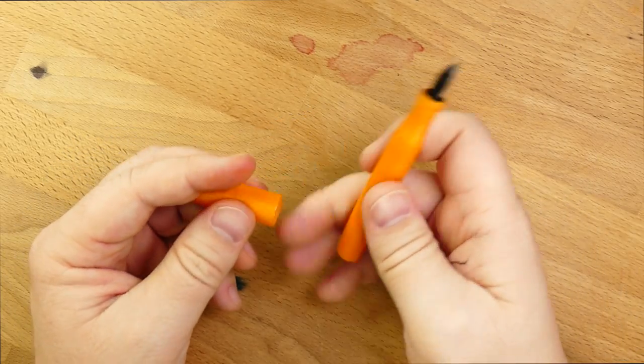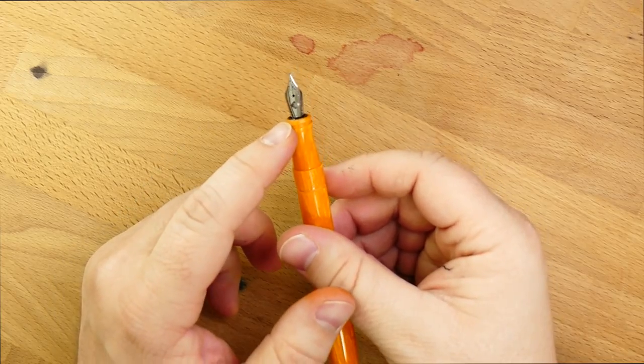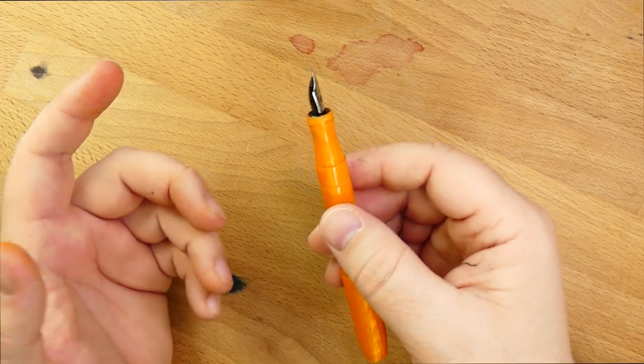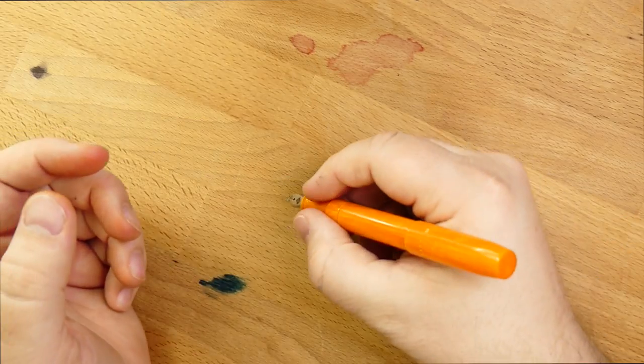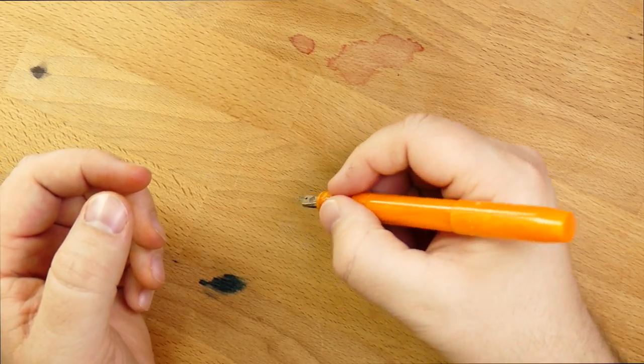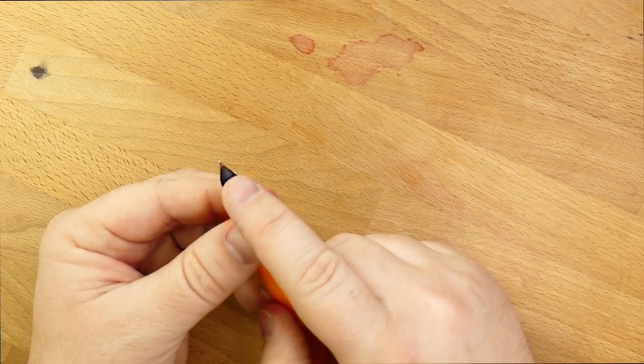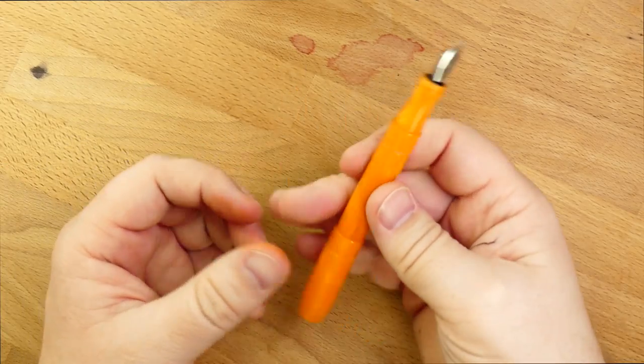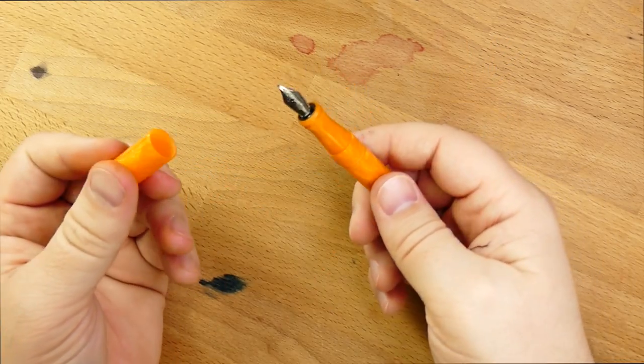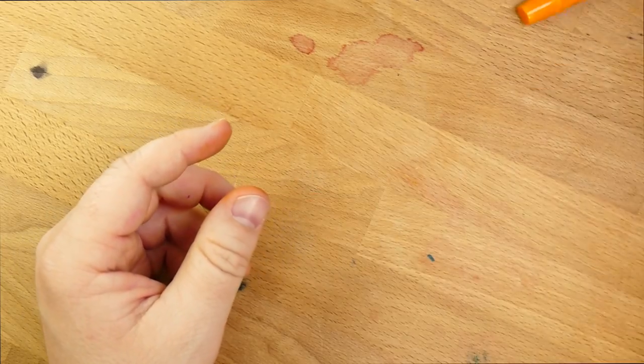The other thing that people might complain about possibly is that it's a number five nib. I know there are some people that have a strong preference towards a number six nib. And I get it. Number six nib gets you further away from the page. It changes your writing angle. It's got a little bit more tipping real estate. But number five is a perfectly good nib.